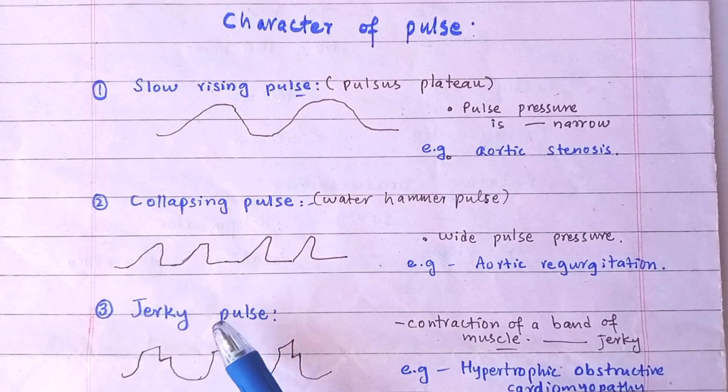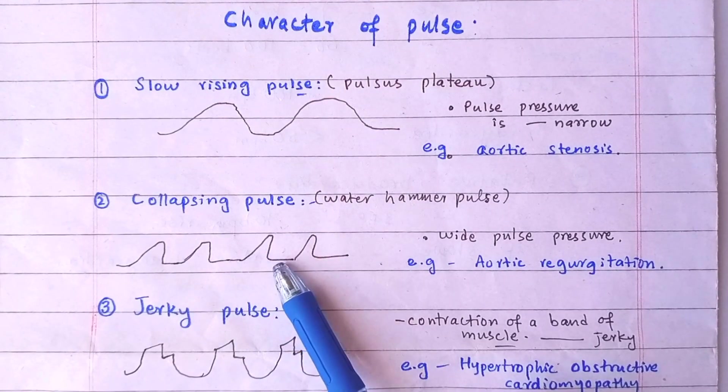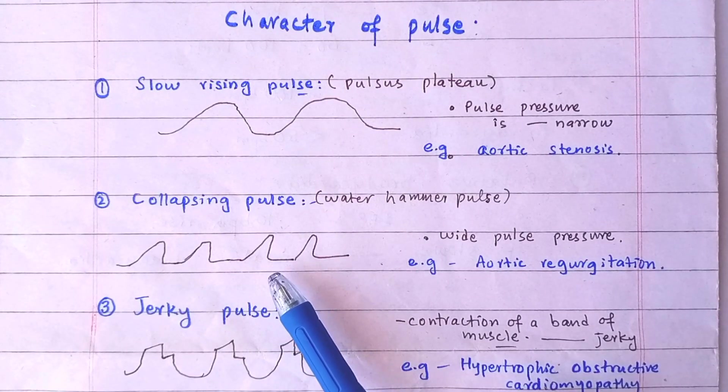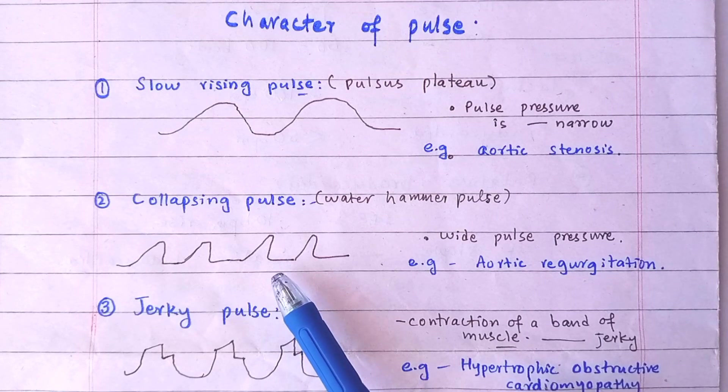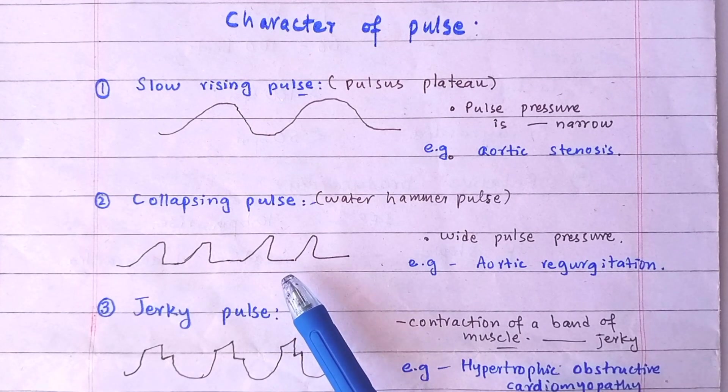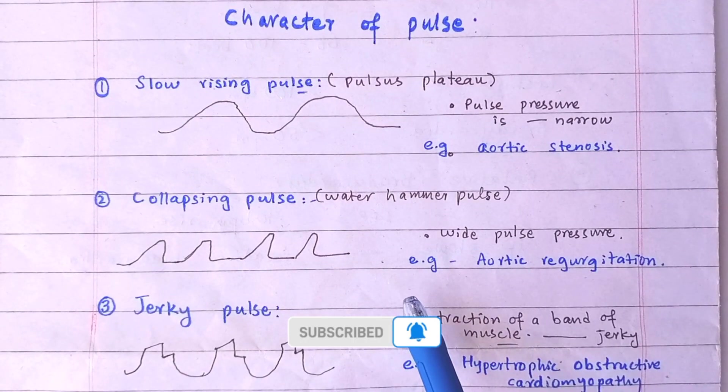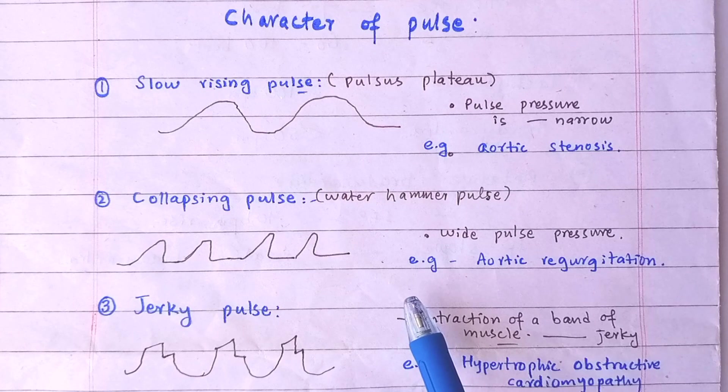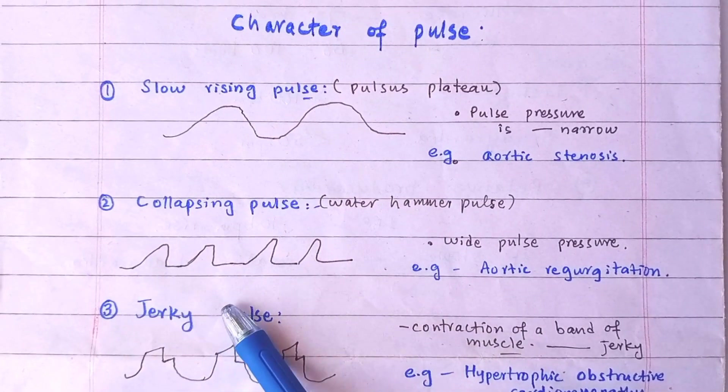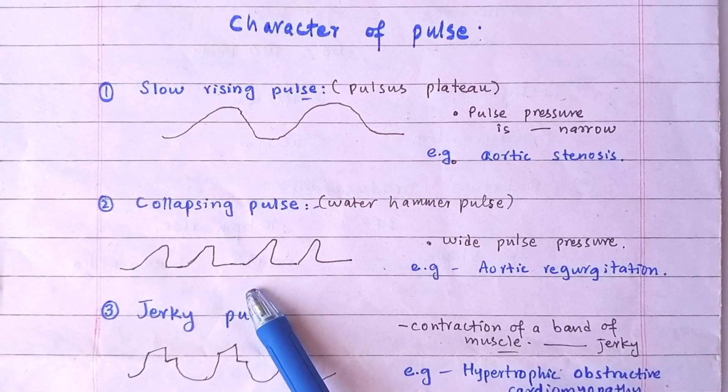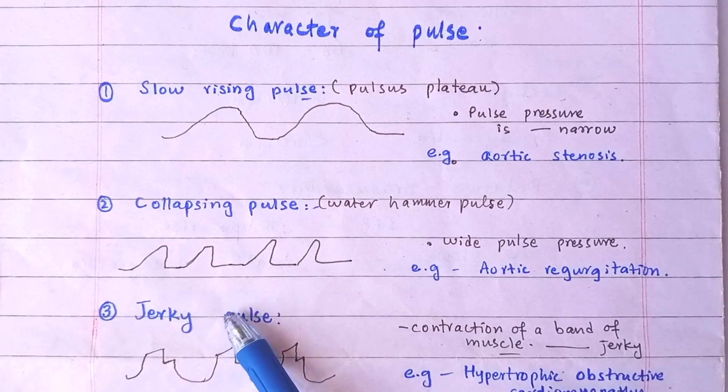To palpate the collapsing pulse, grasp the patient's wrist with your right arm in such a way that radial pulse is felt along metacarpophalangeal prominence. Lift the patient's arm suddenly by grasping his fingers with your left hand, not with the right hand. There is transient increased runoff of blood towards heart due to effect of gravity, and collapsing character of pulse becomes more obvious for a few beats.